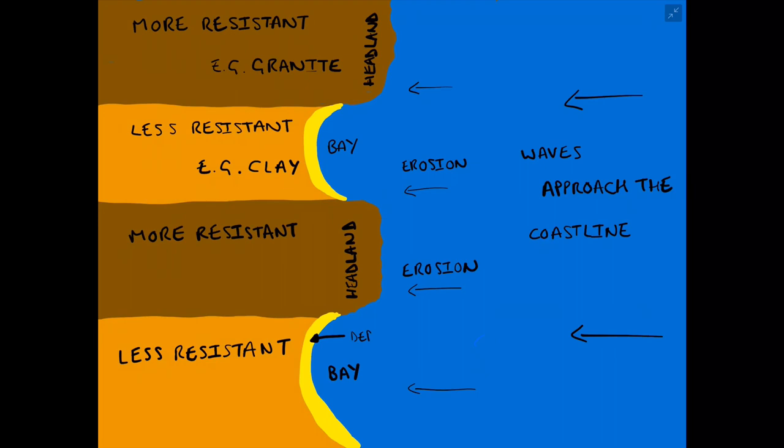For step five, within those bays we have deposition occurring when those waves enter that sheltered area. Because they've traveled a further distance into the bay, they will deposit material like sand, shingle, and potentially some clay, eventually forming a beach. This is the formation of a headland and bay.